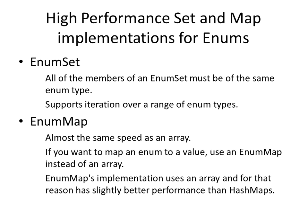EnumSet can also be used to support iteration over a range of enum types. For example, if you have the months from January to December, you can say you want to iterate only from March to June, and it's going to print March, April, May, June. You can specify a range of enum values, but the range values should be consecutive. Then there is an EnumMap, which provides almost the same speed as an array. If you want to map an enum to a value, you should use an EnumMap instead of an array. Internally it uses an array, so it always provides better performance than HashMaps.